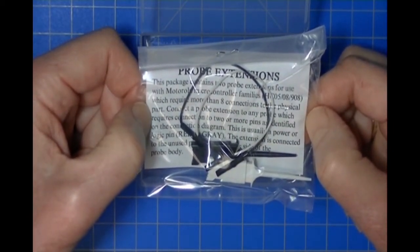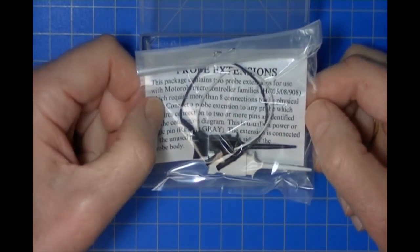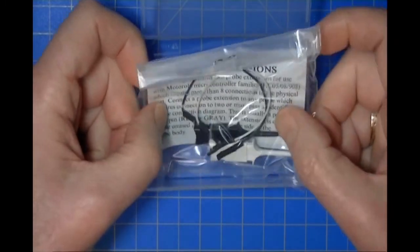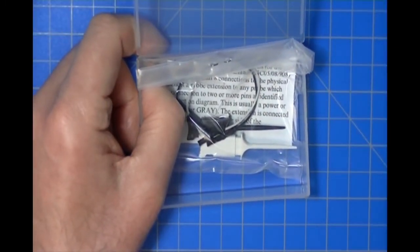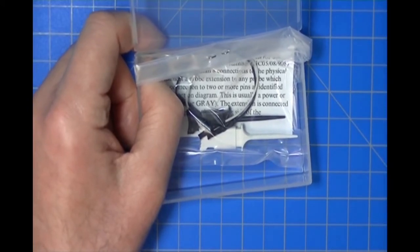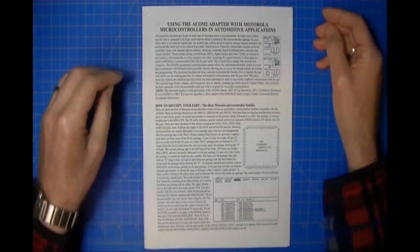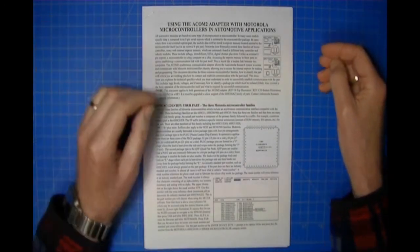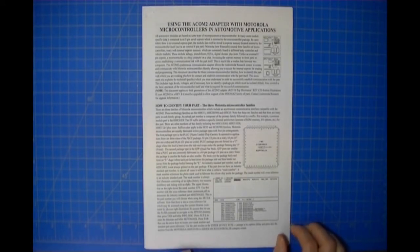The next thing I want to show you is the documentation that comes with the ACOM 2. There are two pieces of documentation that come with your ACOM 2, and this one is the primary document.